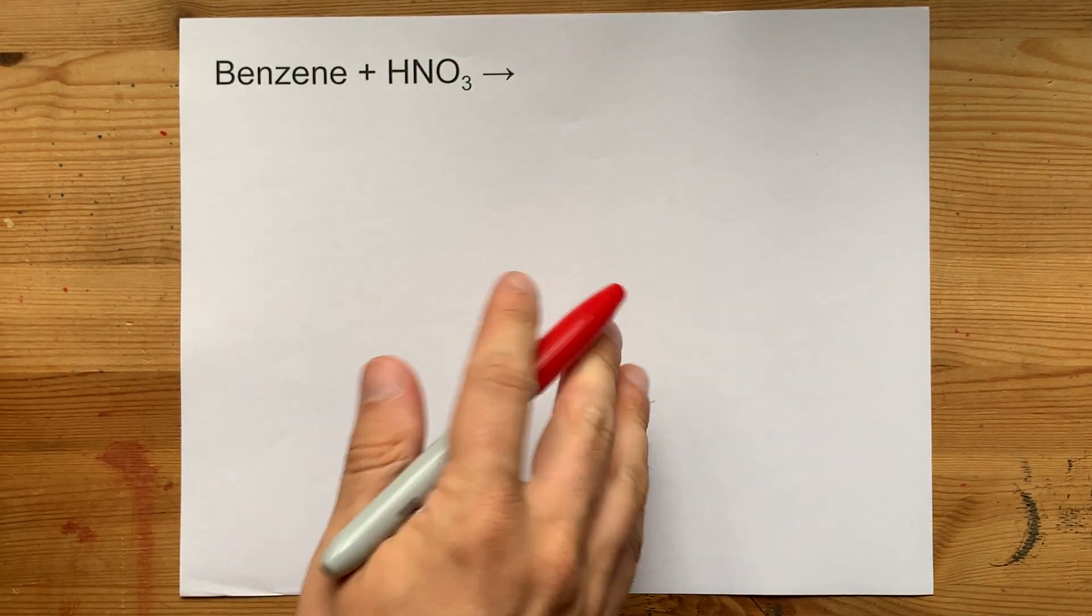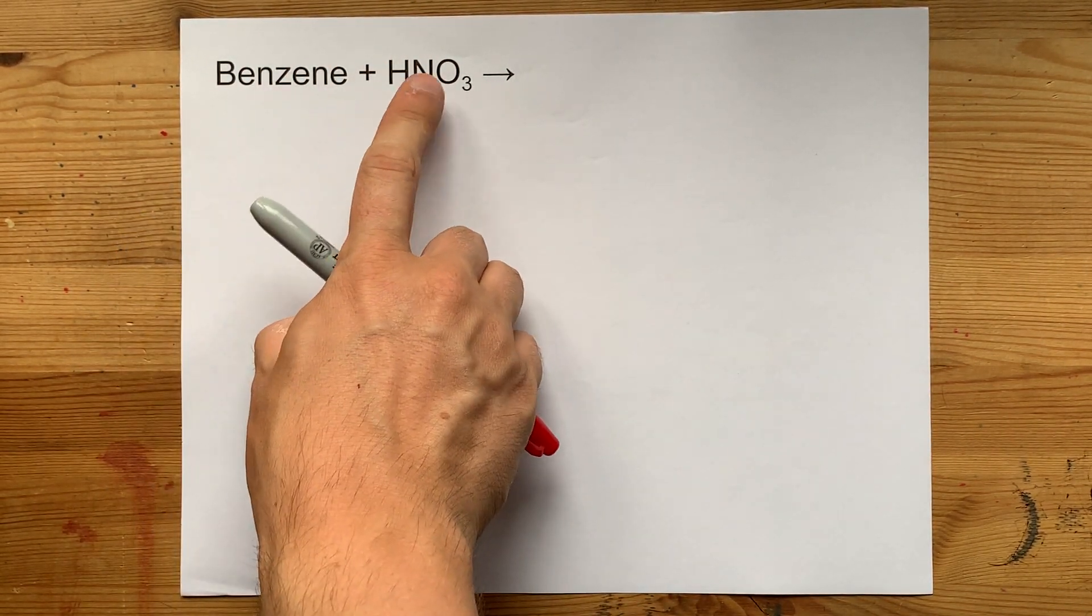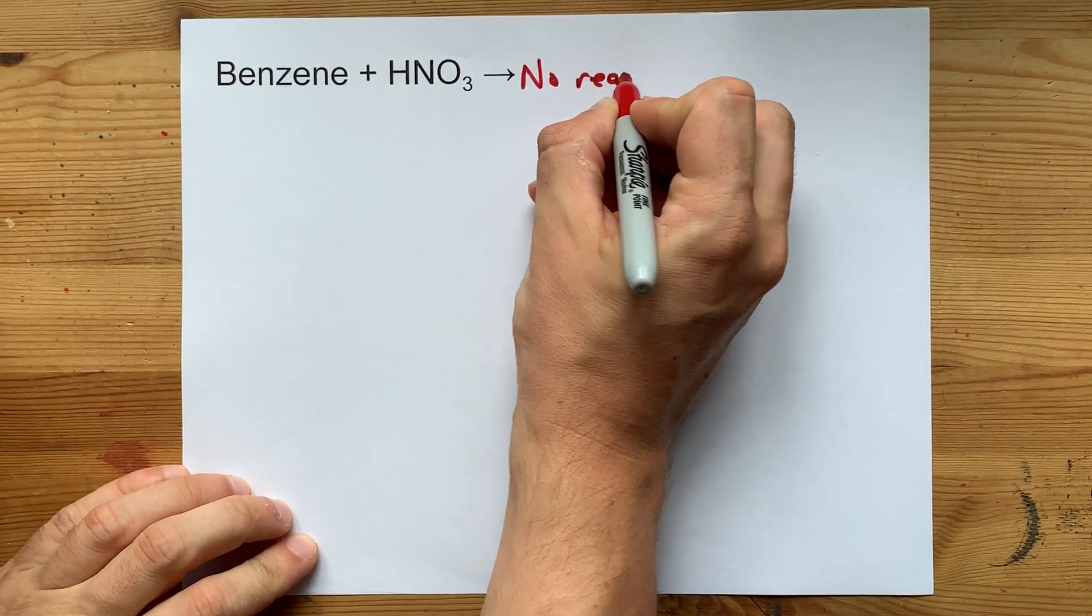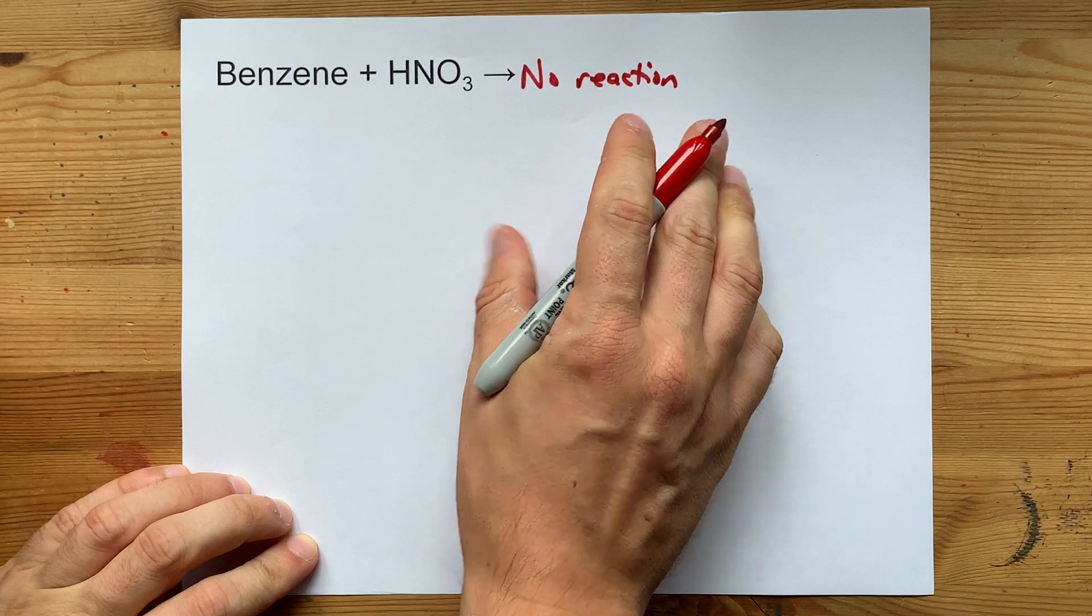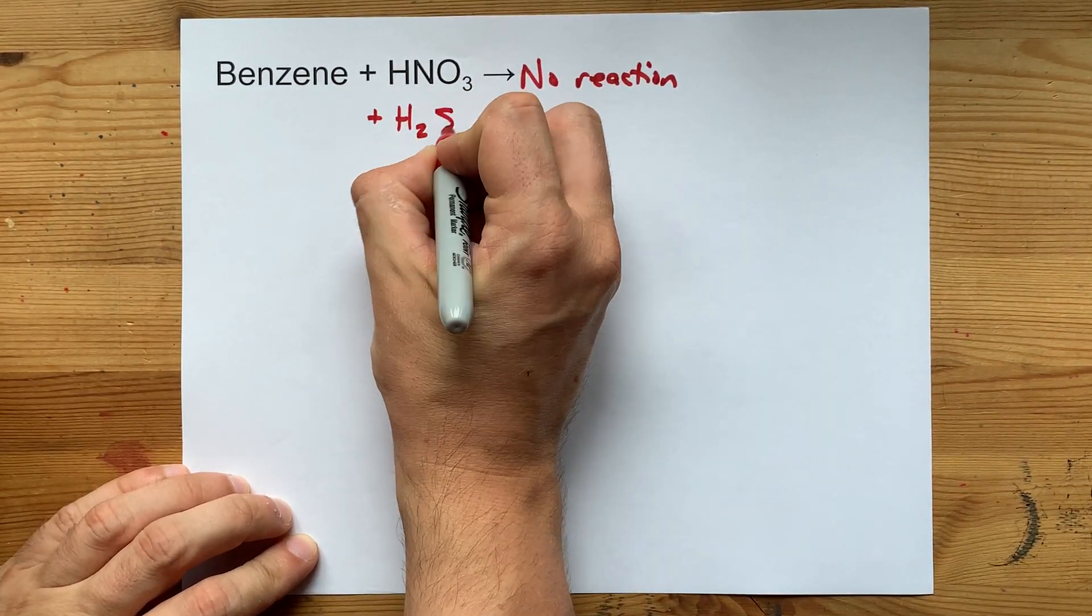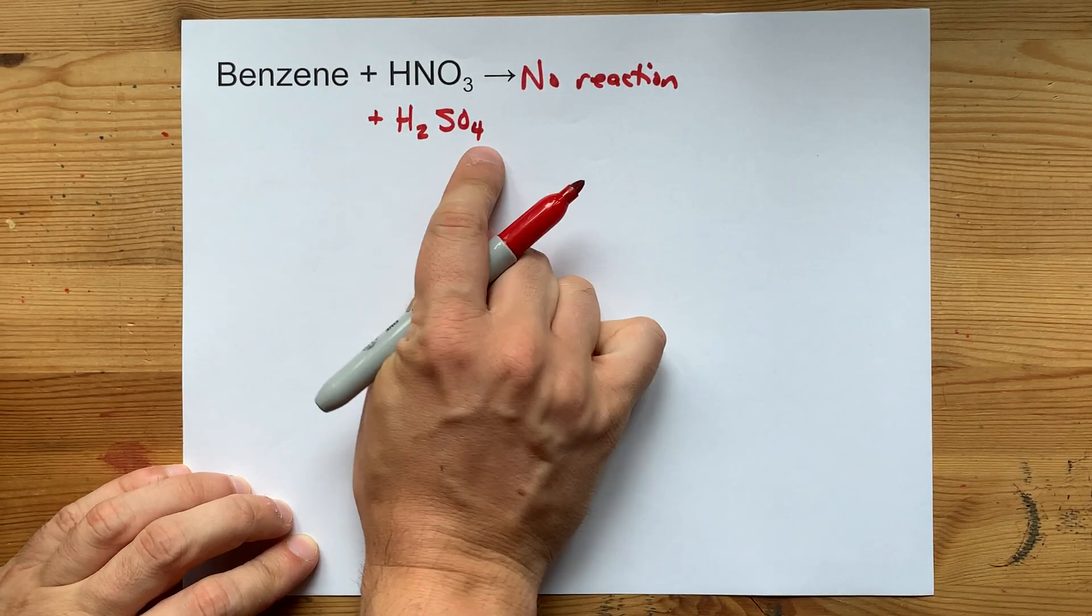A student asked me what happens when you react benzene with nitric acid. The official answer for you is that there is no reaction between those two, unless you also have concentrated sulfuric acid in the mix.